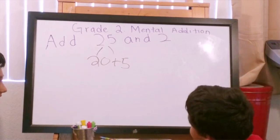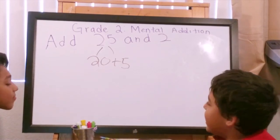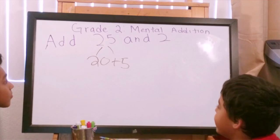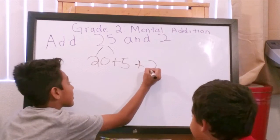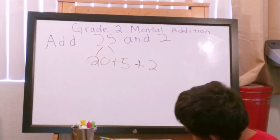So, twenty is in the tens place, five is in the ones place. Plus two. Because two is in the ones place too.